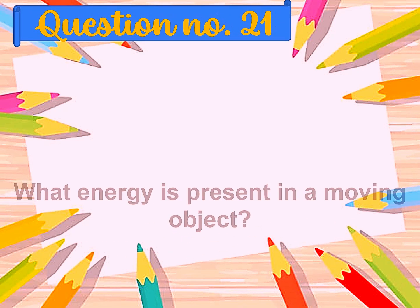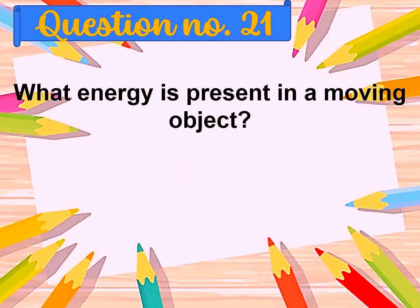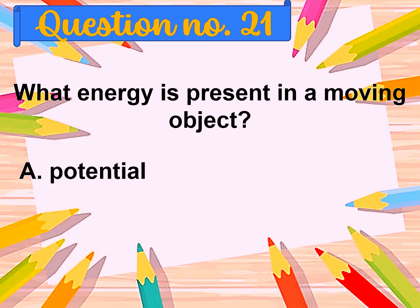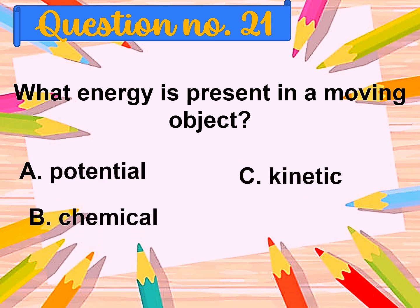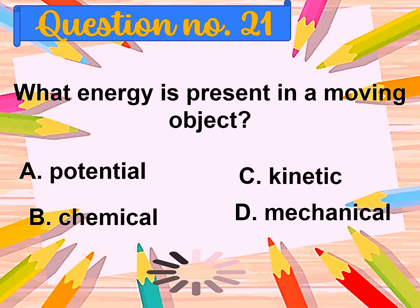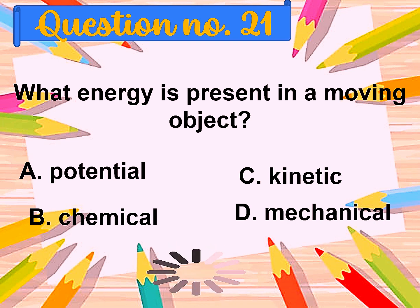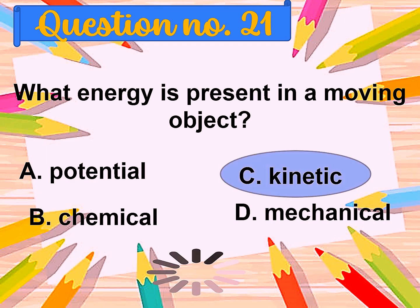Question number twenty-one: What energy is present in a moving object? A. Potential, B. Chemical, C. Kinetic, D. Mechanical. The correct answer is kinetic.